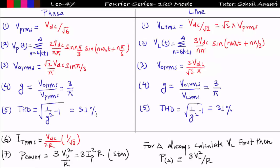To summarize: on the left are phase parameters, on the right are line parameters. In 120-degree mode, Vp_rms = Vdc/√6, while line voltage RMS = Vdc/√2 = √3 × phase RMS voltage. The Fourier series expressions have been derived, and from them we get the fundamental RMS voltage, distortion factor, and THD. Items written in red differ from 180-degree mode; items in blue are the same in both modes. The thyristor RMS current changes to (Vdc / 2R) × (1/√3).